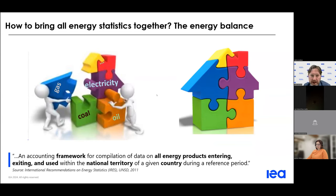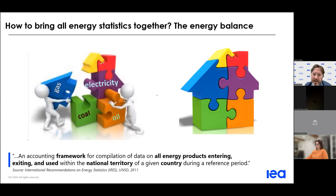What is an energy balance? To quote IRIS, an energy balance is an accounting framework for the compilation of data on all energy products entering, exiting, and used within the national territory of a given country during a reference period. At the IEA, we have five main annual questionnaires — coal, oil, natural gas, renewables, and electricity and heat — which collect annual data on each of the main fuel groups. Although the questionnaires are interrelated, none alone provides an overview of the entire energy landscape. The energy balance compiles and reconciles data for all fuels and flows into a single table, providing a summary overview of energy supply and demand in a country for a given time period.